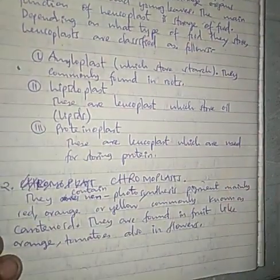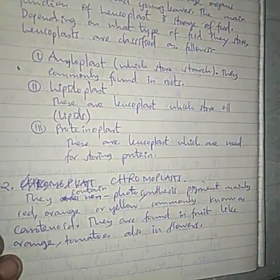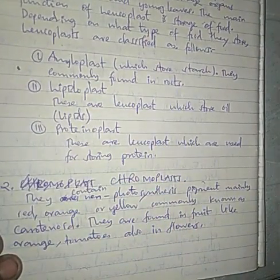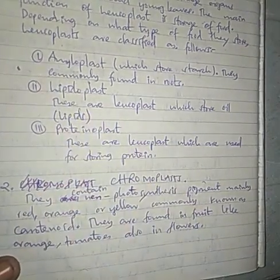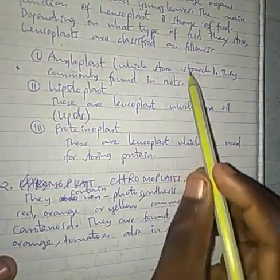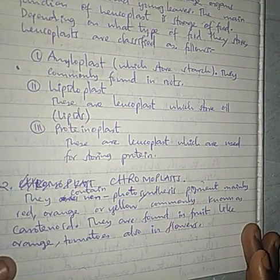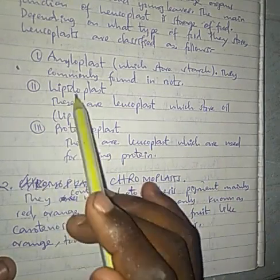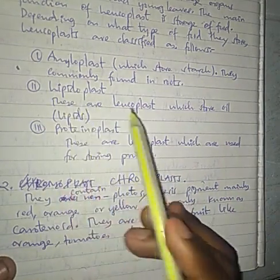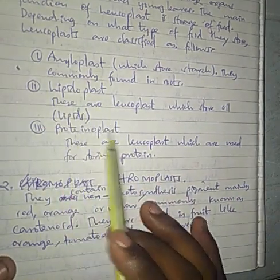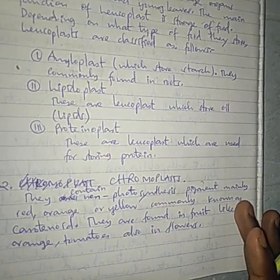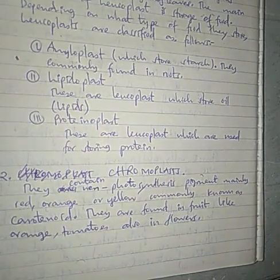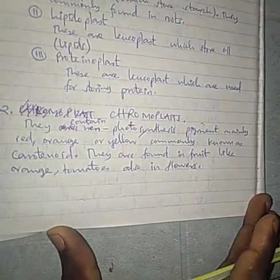Leucoplasts can be defined as plastids without any pigment used for storage of food. Amyloplasts — where 'amylo' means carbohydrate — are plastids which store carbohydrate. Lipidoplasts store lipid. And protinoplasts store protein.